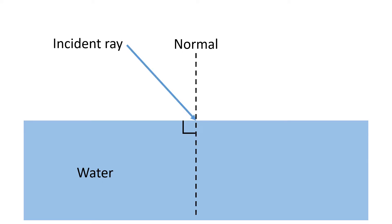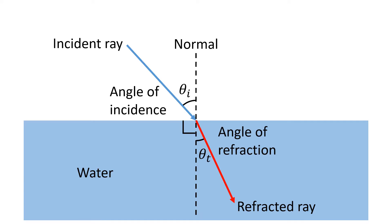We've drawn in the normal line 90 degrees to the surface of the flat water and we have an angle of incidence. But this time because the surface isn't reflecting, the ray actually gets transmitted into the water and therefore we have a refracted ray that goes through and we have an angle of refraction.